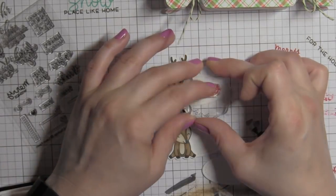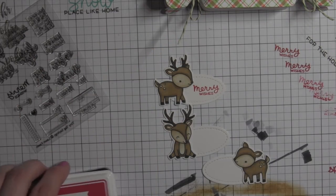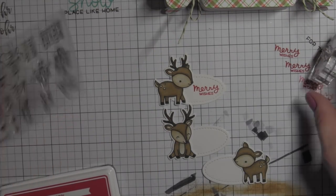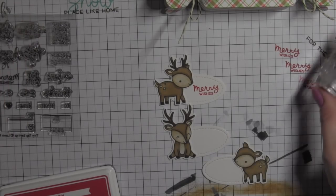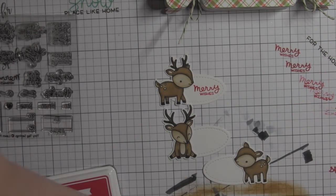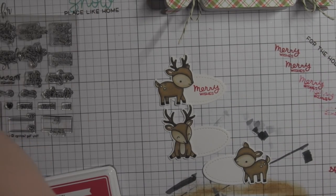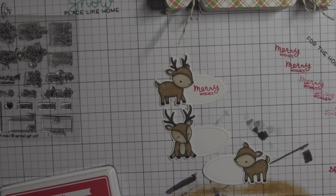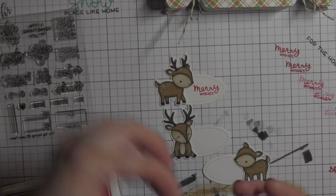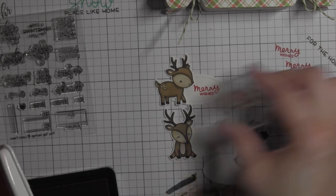I am stamping each of them with the Lawn Fawn Lobster Red ink. I've got Merry Wishes here. I will also stamp another greeting. I decided to mix it up to make it even easier. You could totally stamp the same greeting on all of the candy boxes you make.